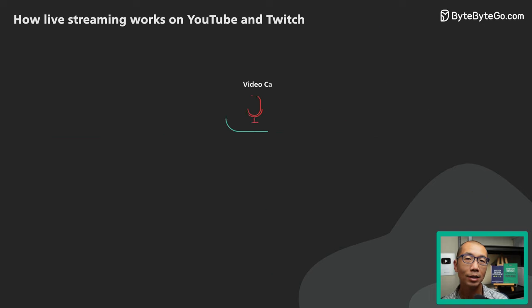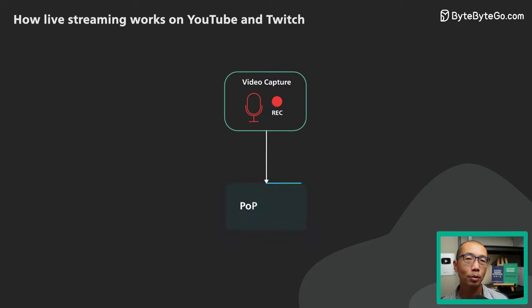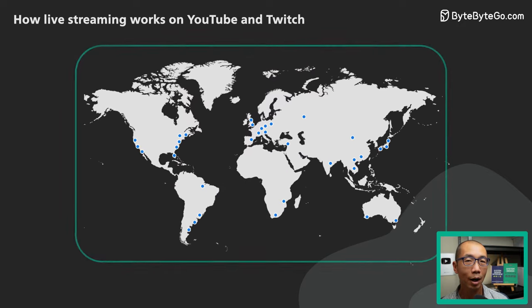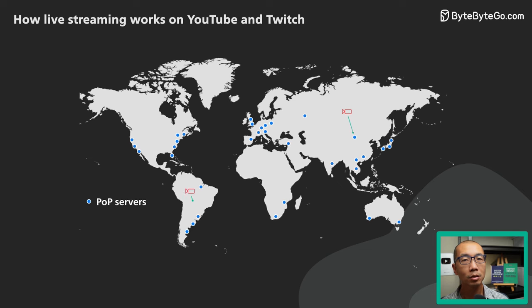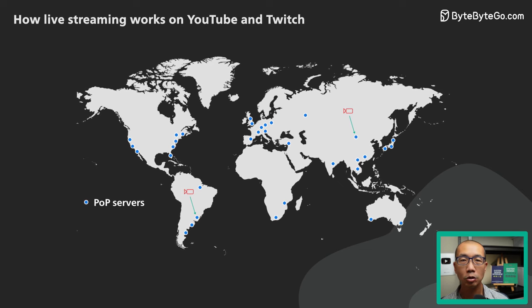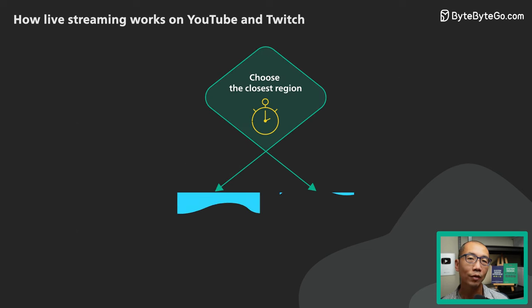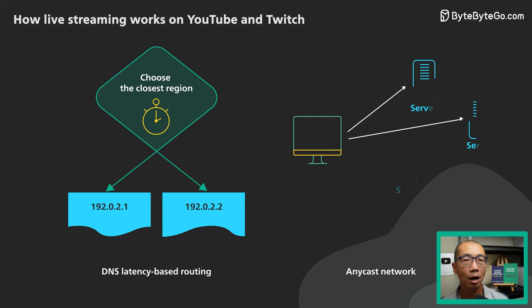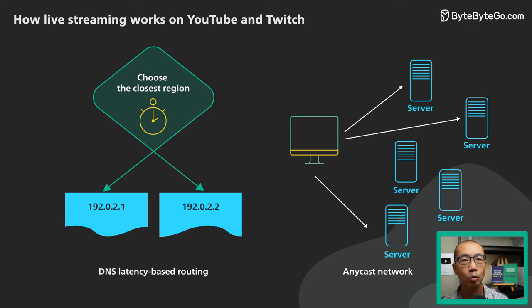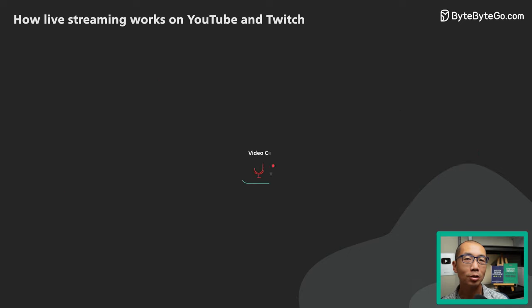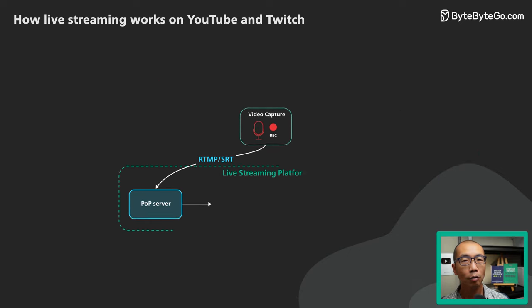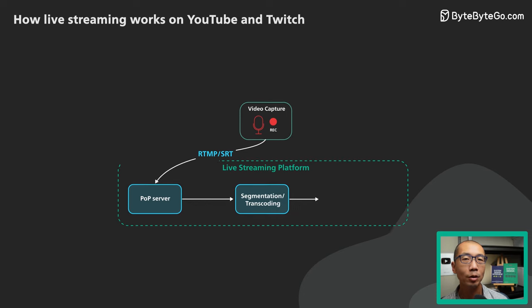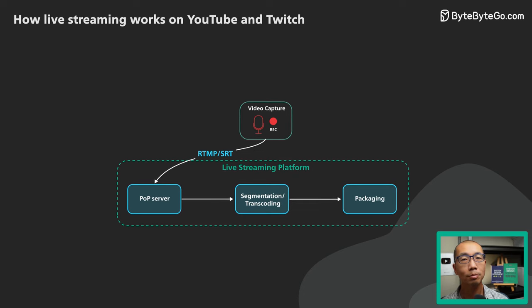To provide the best upload conditions for the streamer, most live streaming platforms provide point-of-presence servers worldwide. The streamer connects to the closest point-of-presence server, which usually happens automatically via DNS latency-based routing or an anycast network. Once the stream reaches the point-of-presence server, it is transmitted over a fast and reliable backbone network to the platform for further processing.